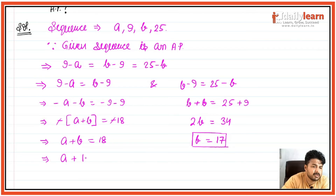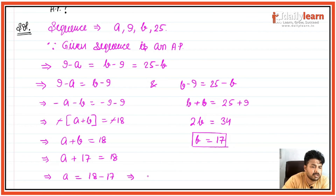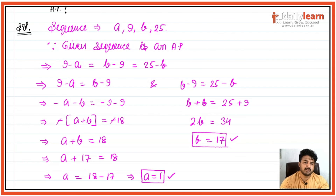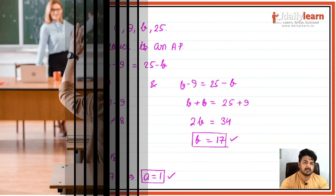Ab b ki value 17 aa gayi. a ki value ke liye a plus b equals 18 mein b ki value put karo: a plus 17 is equal to 18, toh a is equal to 1. Toh a humara 1 aur b humara 17 aa gaya.